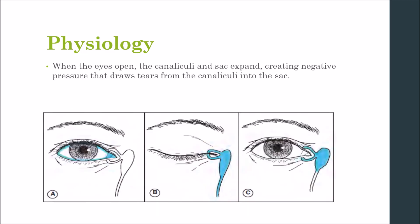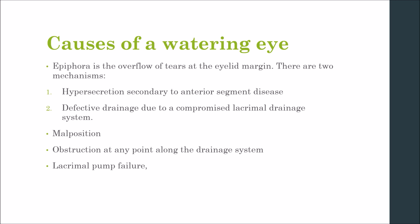When the eye opens, the canaliculi expand along with the sac, creating a negative pressure that draws tears from the canaliculi into the sac. When this anatomy or physiology is disturbed, it causes a watery eye — also called epiphora — which is the overflowing of tears at the lid margin. There are two mechanisms: hypersecretion secondary to anterior segment disease, and defective drainage due to a compromised lacrimal drainage system.